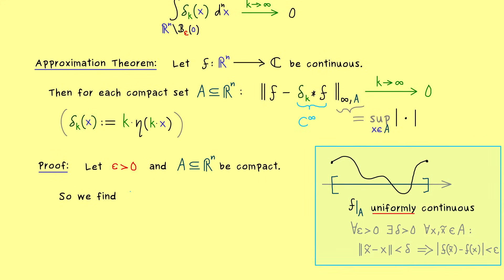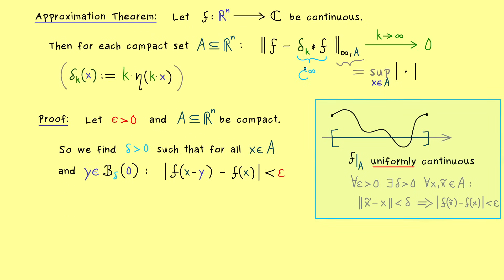In other words, now we can find a real number δ such that for any point in our domain A and y in the δ-ball around zero, we have that the distance between two outputs is less than ε. So what we put into the function f is first x minus y and the second point is just x. So by definition, the distance between both points is less than δ such that the outputs have a distance less than ε. So this is what we need simply because we have the convolution involved.